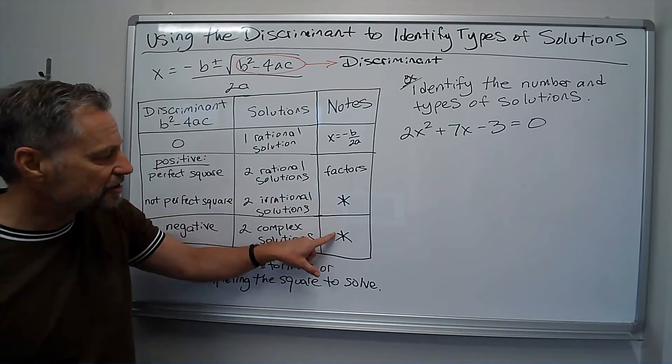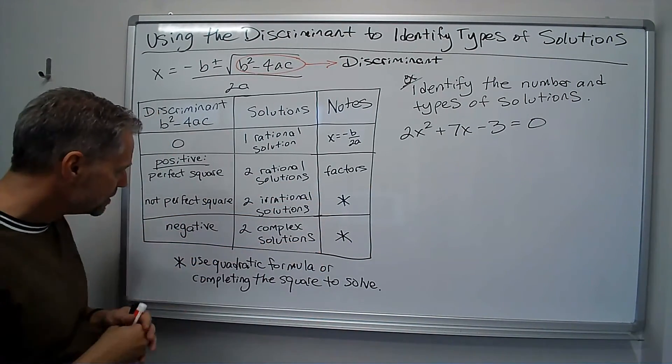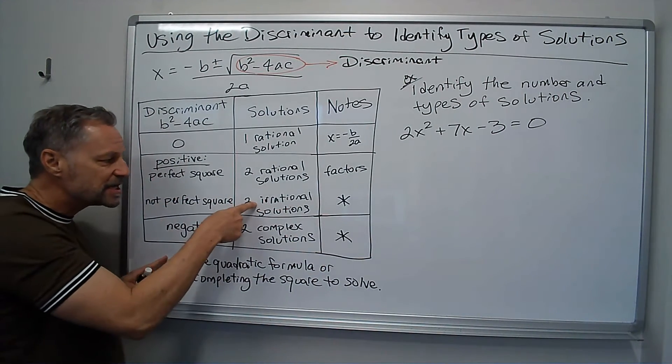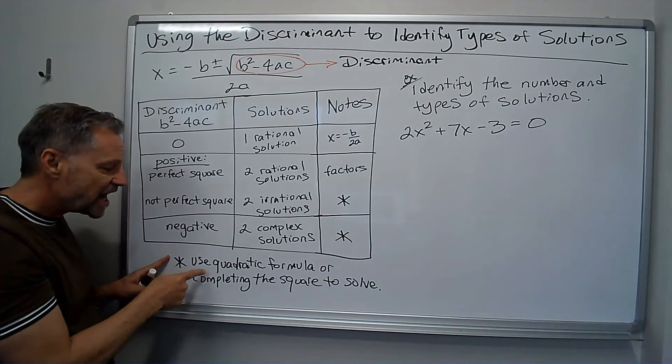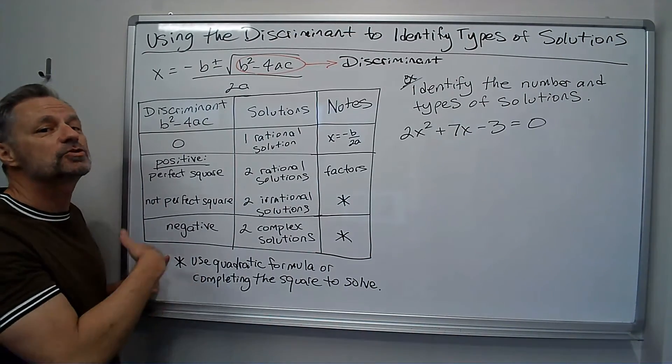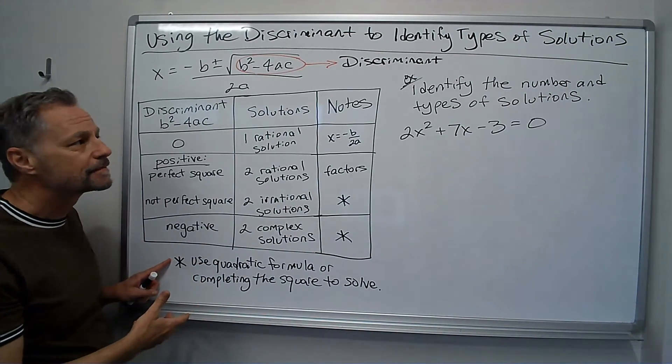And what I've said here, I put a little star here. The star says for these two types of things, if I'm going to get two irrational solutions or two complex solutions, I should use either the quadratic formula or completing the square to solve the equation.